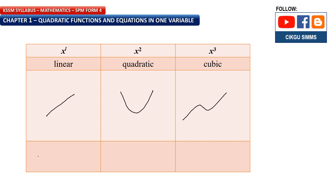I'll give you an example of each. For a linear function, y equals x plus 1 — you can see x is to the power of 1, the highest is 1. For quadratic, an example is y equals x squared plus x plus 1 — the highest is 2. For cubic, an example is y equals x cubed plus x squared plus x plus 1 — the highest is 3.